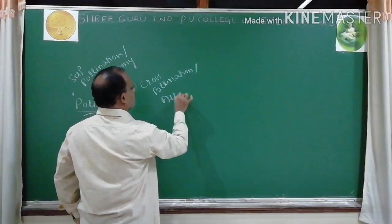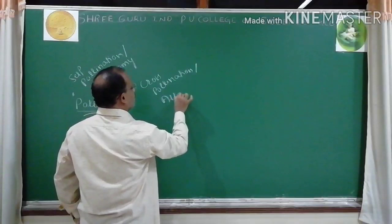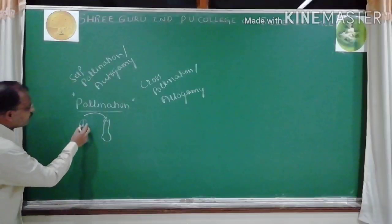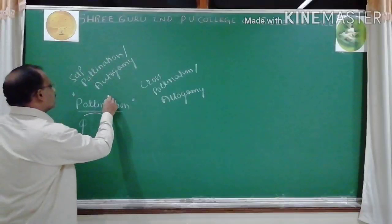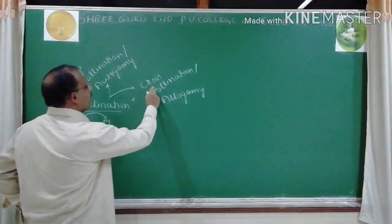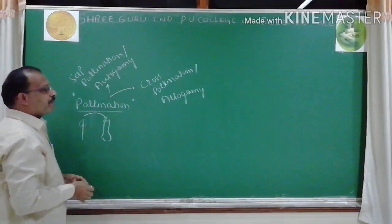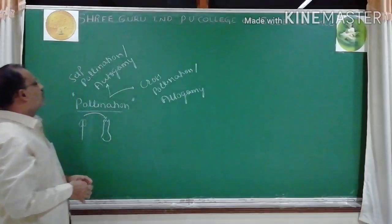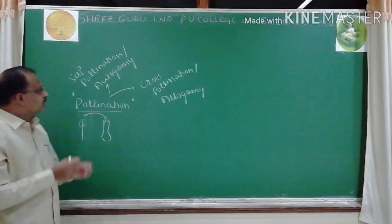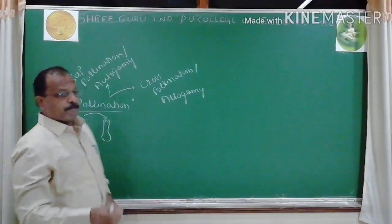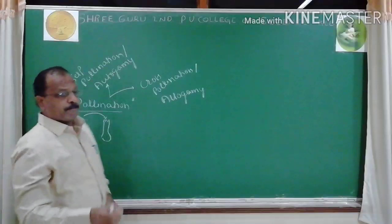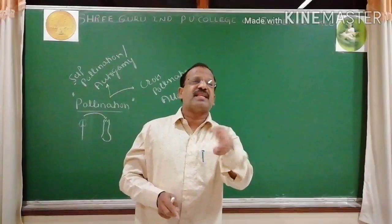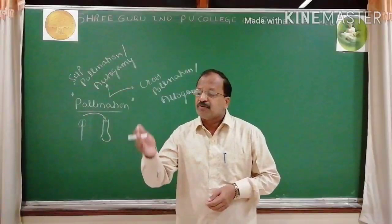Cross-pollination is also called allogamy. Transfer of pollen grain from anther to the stigma of the same flower is called self-pollination. Transfer of pollen from anther to the stigma of a different flower is called cross-pollination.